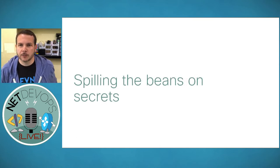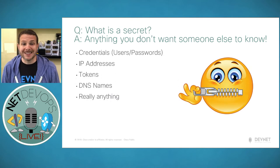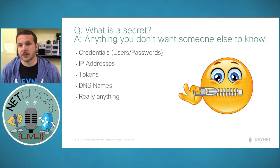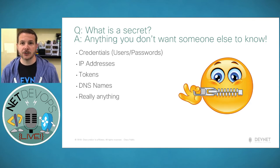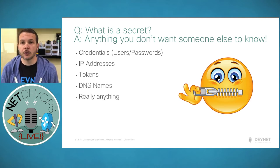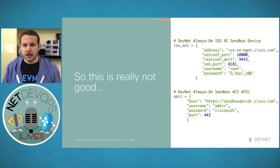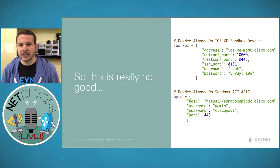Moving into our next section — spilling the beans on secrets. Secrets are a big part of what we have to handle when doing network automation. So what is a secret? The answer is really anything you don't want someone else to know — credentials, usernames, passwords, IP addresses, tokens if you're working with token-based authentication, maybe even DNS names — really anything about your environment that you don't want publicly available.